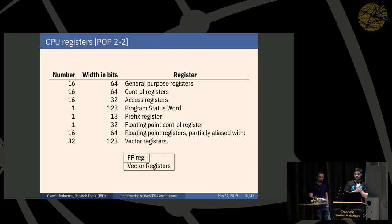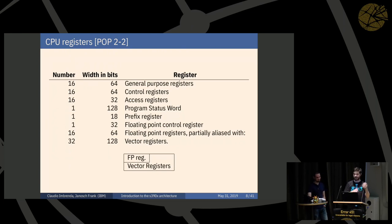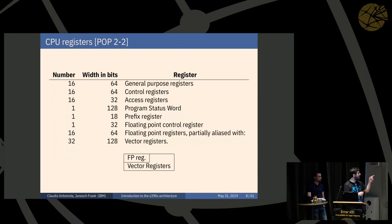Registers: we have 16 general-purpose registers, 16 control registers, 16 access registers (discussed later), one program status word (discussed later), one 18-bit prefix register (discussed later), a floating-point control register for selecting rounding modes, and 16 floating-point registers which are partially aliased with the 32 vector registers. The first half of the first 16 vector registers is aliased to the floating-point registers, which is an interesting choice.